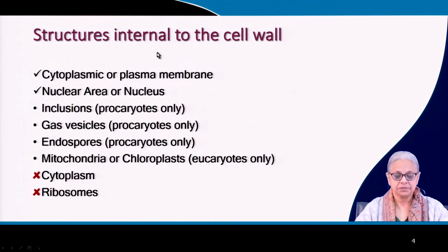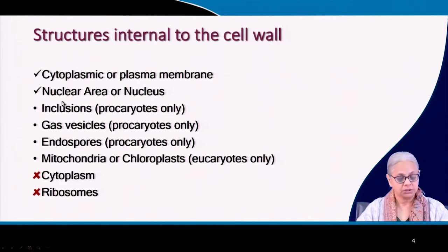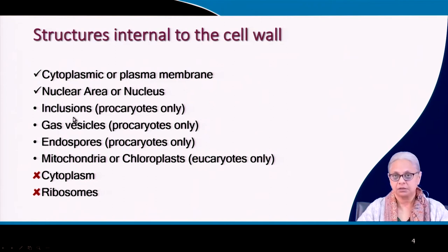Then we come to structures that are internal to the cell walls. We have already looked at the cytoplasmic or plasma membrane and the nuclear area. Now we are going to look at the remaining organelles: inclusions, gas vesicles, and endospores. These are present in prokaryotes, while mitochondria and chloroplasts are present in eukaryotes only.